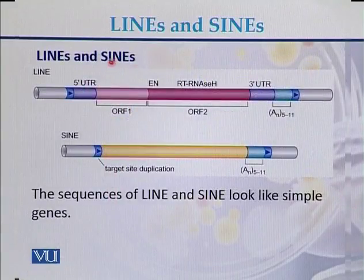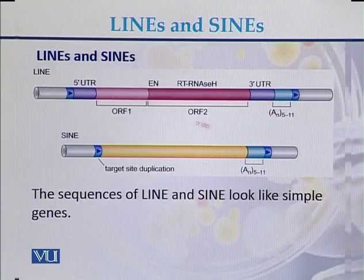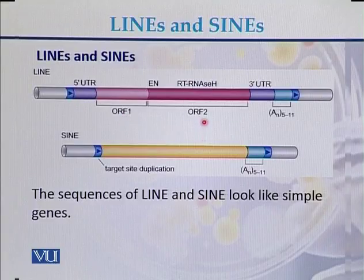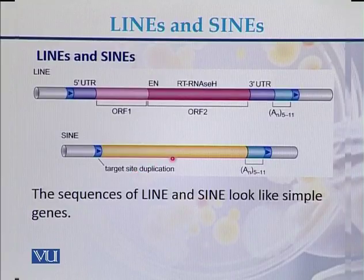Looking at typical diagrams comparing LINEs and SINEs: in the case of LINEs, there is a 5' UTR region, a 3' UTR region, and in the middle there are two ORFs — ORF1 and ORF2. In contrast, SINEs, which are short interspersed nuclear elements, have a middle portion responsible for retrotransposition.